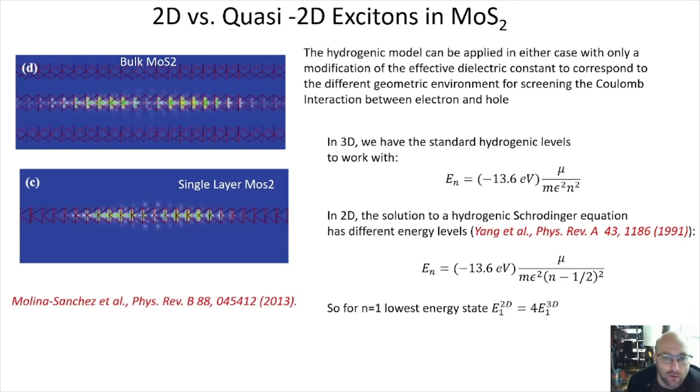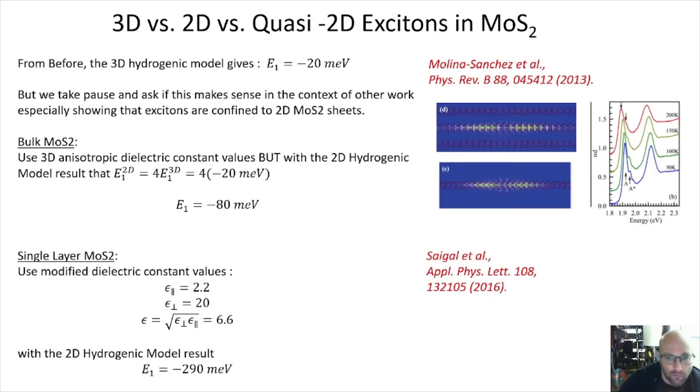What's the consequence? The consequence is that the expression for the energy eigenvalues in two dimensions for a hydrogen atom problem, an electron bound to a hole, is different than in three dimensions. In 3D, this was our formula for the energy eigenvalues. But in 2D, it's almost the same, except the denominator is modified with this factor of n minus a half. When you plug in n equals one to get the lowest energy state, you get that the energy, the binding energy in 2D is four times the binding energy in 3D. So if it's true that we have to consider bulk MoS₂ as quasi two-dimensional, the 20 millivolt binding energy value is not correct. Instead, we need to model bulk MoS₂ as quasi two-dimensional by multiplying this value by four. So the binding energy would be 80 millivolts instead of 20.